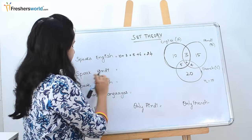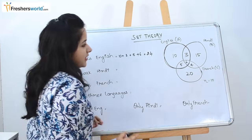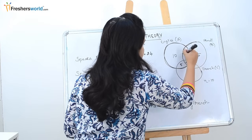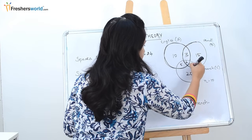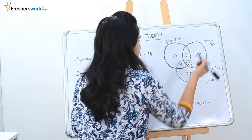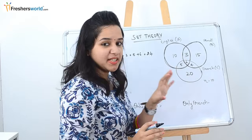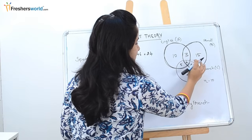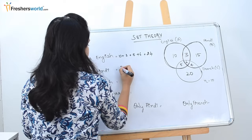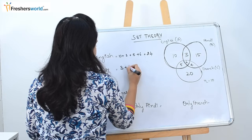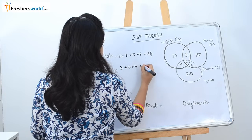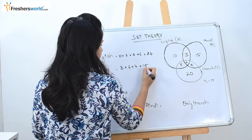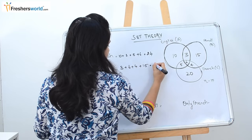Next, they are asking the number of people speaking Hindi. Circle B represents the people speaking Hindi, so the whole circle B comprises those people. This is nothing but 3 plus 6 plus 4 plus 15. So 6 plus 4 is 10, then 25 and 28. The number of people speaking Hindi is 28.